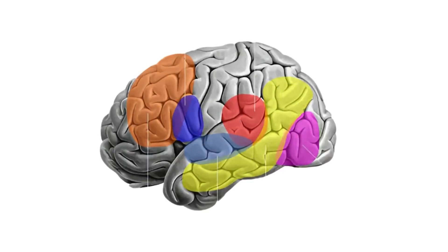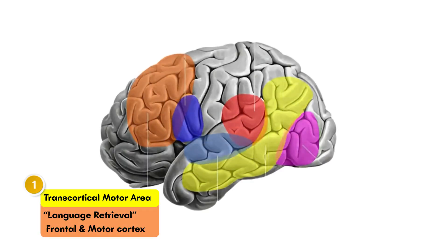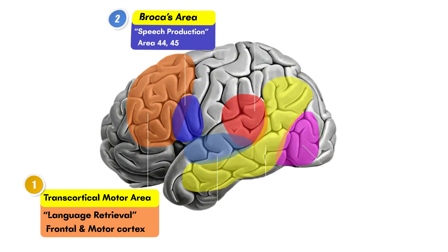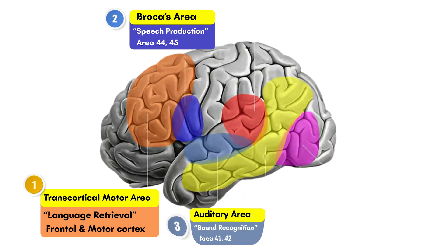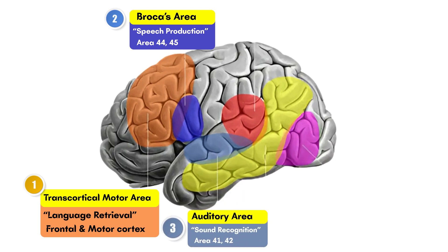Here are some important areas of the brain. First is the transcortical motor area, having some part of frontal and motor cortex. This area helps in memory and language retrieval process in order to initiate the speech. Then comes the Broca's area, which is primarily responsible for speech production. Third is the auditory area in the temporal lobe, involved in sound recognition. Auditory stimulus is well perceived in this area.